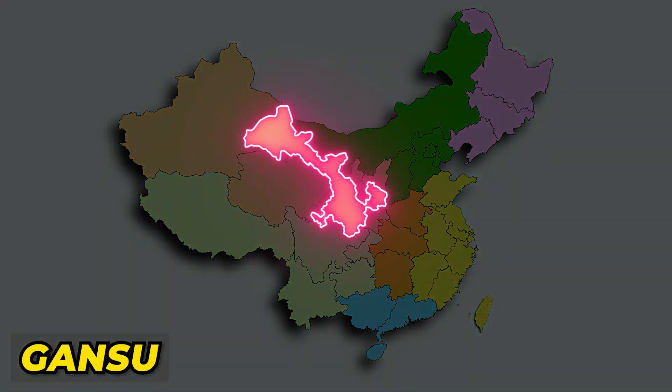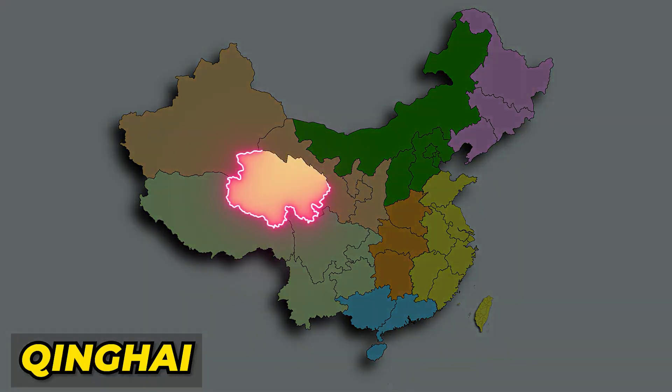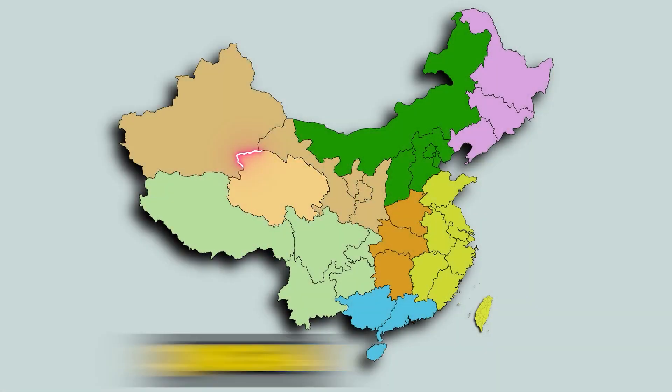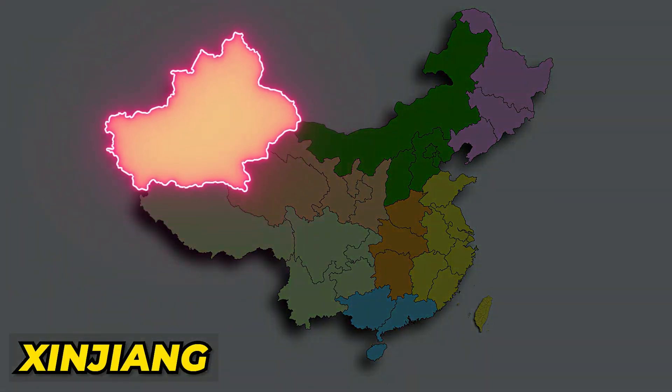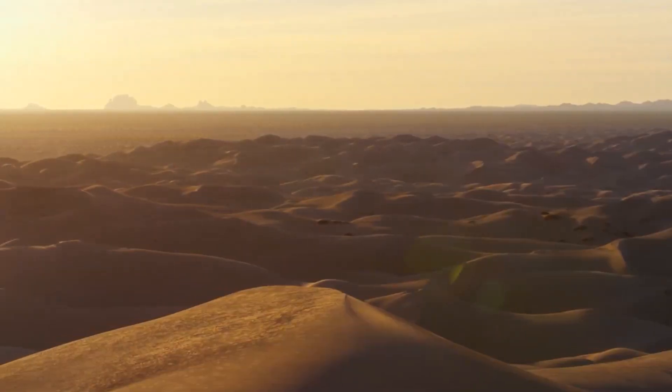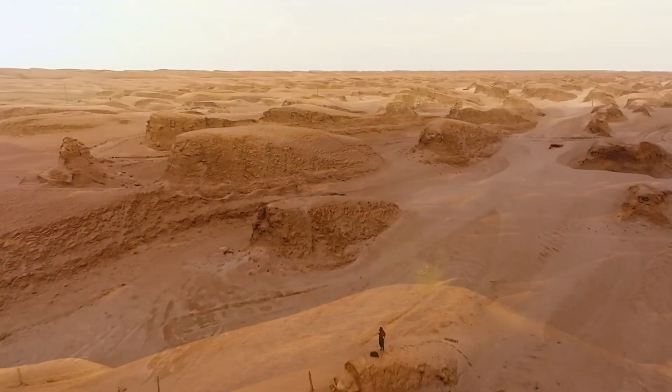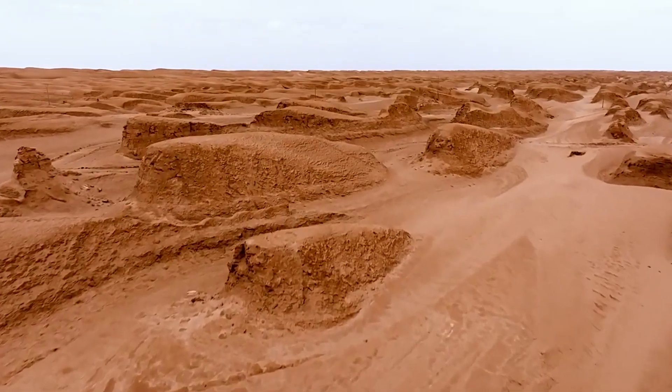Now let's look at the next area in a counter-clockwise order. Northwest China includes Shaanxi, Gansu, Qinghai, Ningxia Hui Autonomous Region, and Xinjiang Uighur Autonomous Region. Located deep in the inland area, it has abundant resources but is very dry, so there are widespread deserts, abundant sandstorms, and fragile ecology. Therefore, the population is sparse and the GDP per capita is rather low in this region.